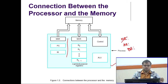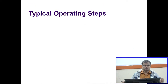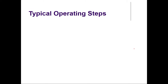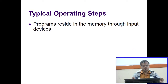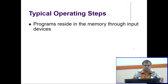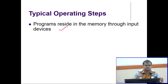We gave the block diagram. Now we will move to what are the typical operating steps — how an instruction gets executed. First, as I said earlier, the program resides in the memory through input devices. That is the basic definition of a digital computer: it accepts input as digitized information, stores it in the memory, and the program resides in the memory through the input device — that is the first step.